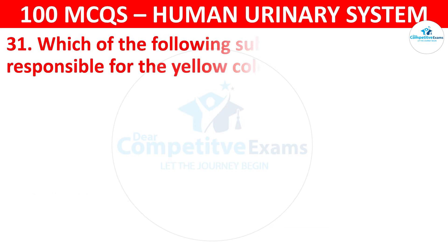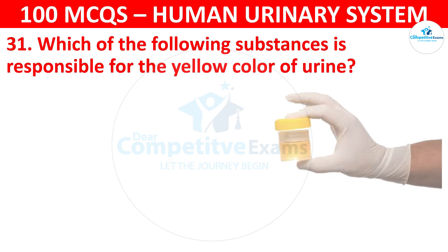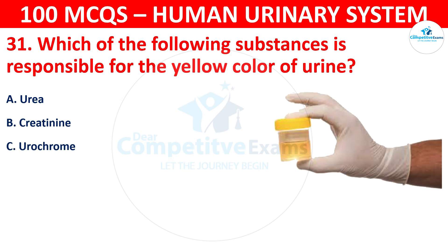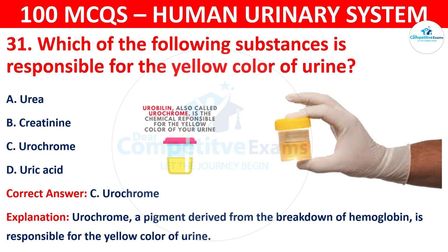Question 31: Which of the following substances is responsible for the yellow color of urine? The options are: urea, creatinine, urochrome, or uric acid. The correct answer is C, that is urochrome. Urochrome is a pigment derived from the breakdown of hemoglobin, and it is responsible for the yellow color of urine.